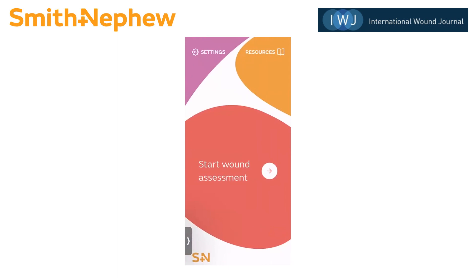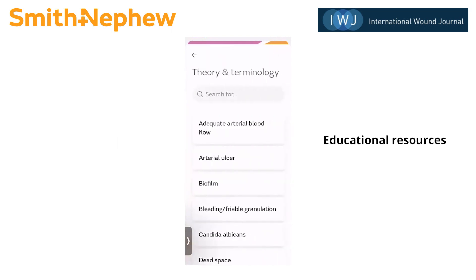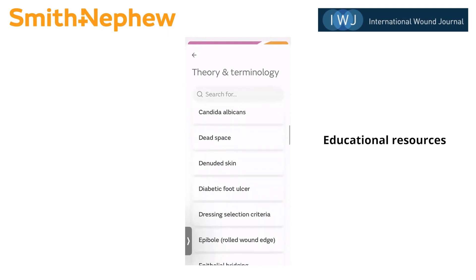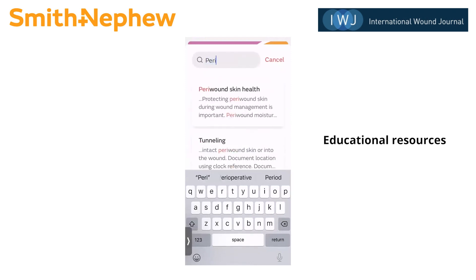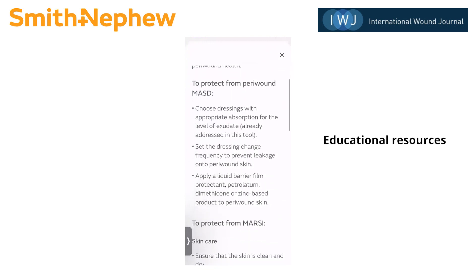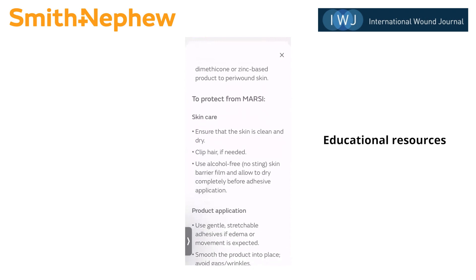At the very bottom I can exit and that takes me back to the home screen. Under resources on the top right, the user can find the references that were used for this app, as well as some theory and terminology. The theory and terminology are used in the pop-ups throughout the assessment. If I tap there, you can see there's an alphabetized glossary of terminology. You can even search — for example, searching for peri-wound skin health brings up information about how to protect from moisture-associated skin damage or from medical adhesive-related skin injury.